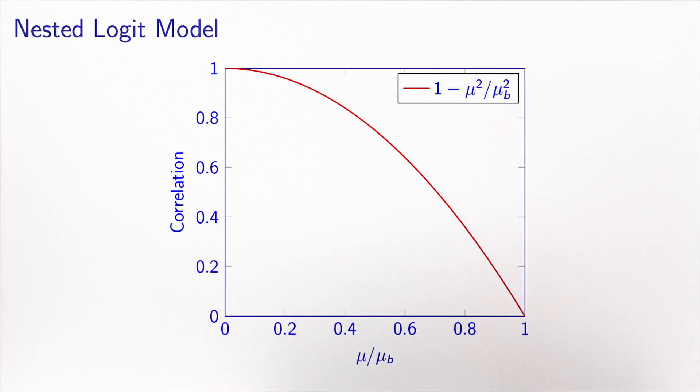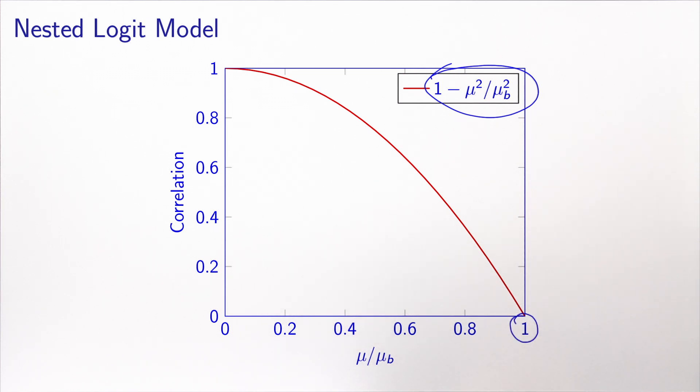The nice thing with the nested logit model is that mu divided by mu_b can take any value between 0 and 1 — complete correlation, complete independence, or anything in between — and this ratio is estimated from data. In terms of correlation, it can be shown that the correlation between the error terms equals 1 minus mu squared divided by mu_b squared. When the ratio is close to 1, correlation is near 0 (back to logit); when close to 0, correlation is close to 1 (alternatives are identical).